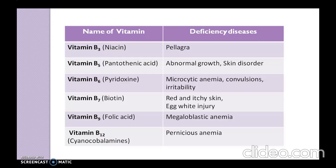Vitamin B12, known as cyanocobalamin, produces pernicious anemia as its deficiency disease. So here we discussed the definition, classification with synonyms, and the deficiency diseases associated with vitamins. Hope all of you got this. Thank you and happy learning.